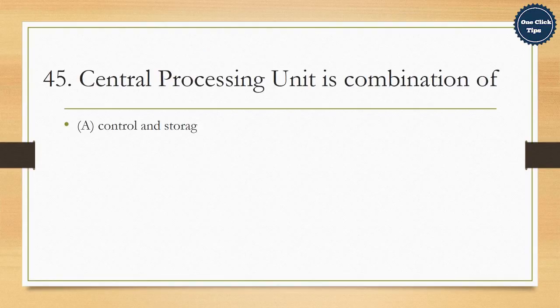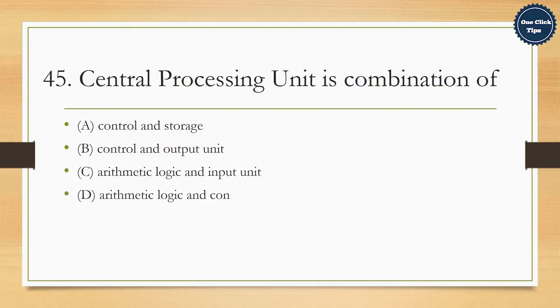45. Central processing unit is combination of A. Control and storage, B. Control and output unit, C. Arithmetic logic and input unit, D. Arithmetic logic and control unit. The correct answer is D. Arithmetic logic and control unit.